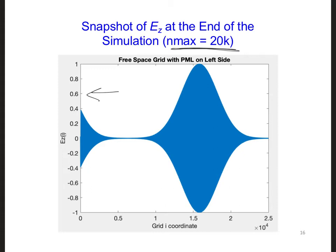But here you can see that the entire pulse hasn't propagated off of the grid yet. So one thing we should do in order to adequately test the PML is to increase nmax.